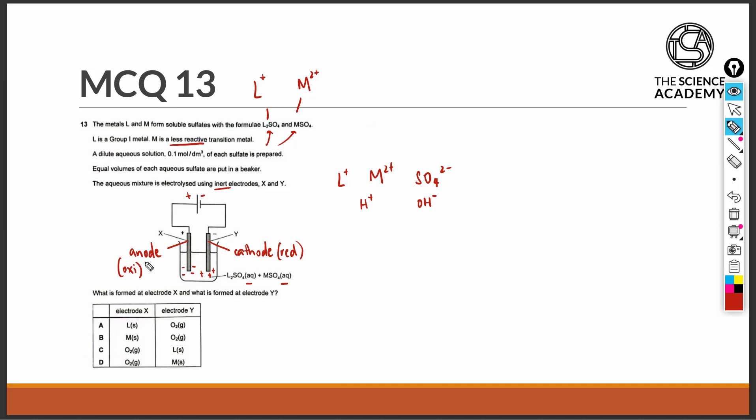At the anode, which attracts the anions, only the sulfate ions and the hydroxide ions are attracted. The hydroxide ion will be the ion that is preferentially discharged to give us oxygen gas. Hence, at electrode X, oxygen gas should be the product formed.